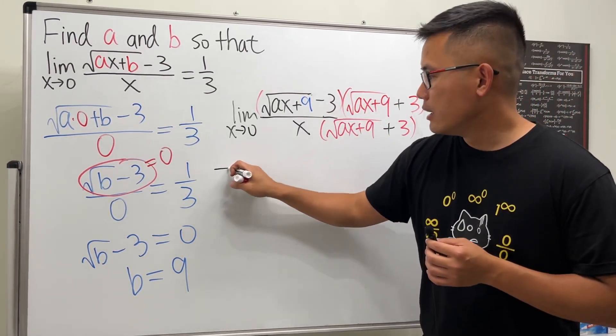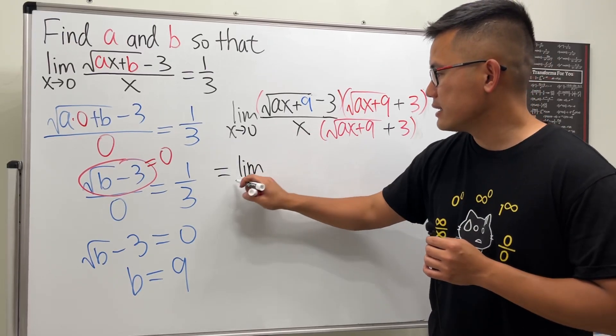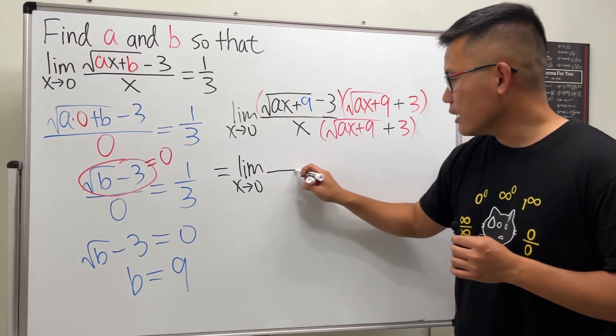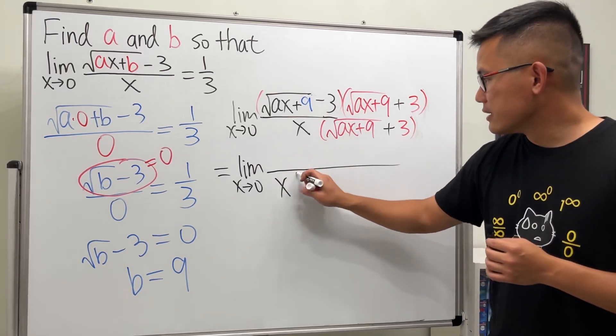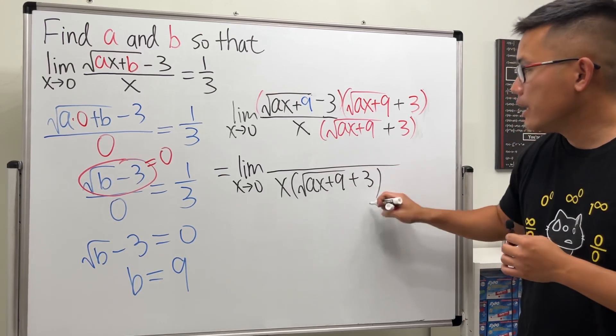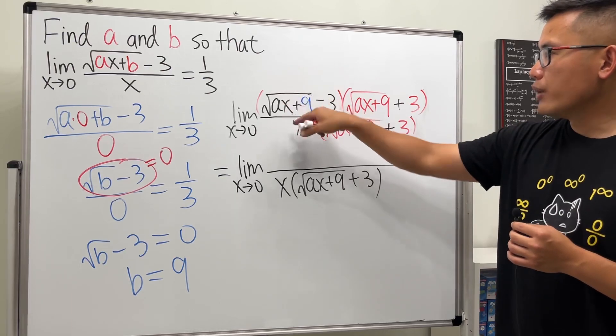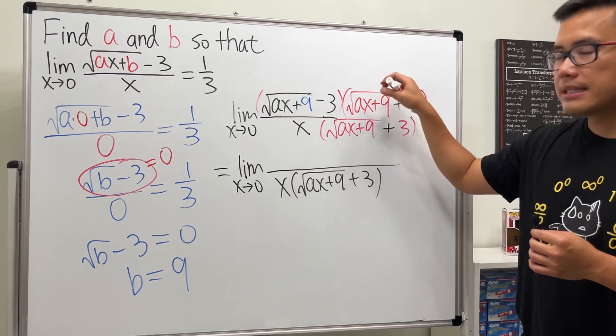So yeah, again, we're just multiplying the top and bottom by the conjugate. So now let's just go ahead and work this out. Usually we just need to work out the top because the bottom—you will see that the x is going to get cancelled really fast anyway.